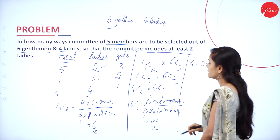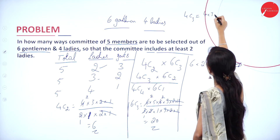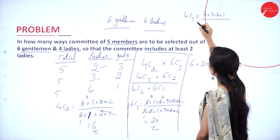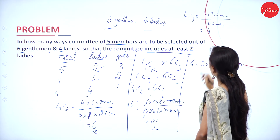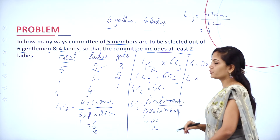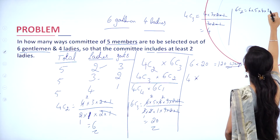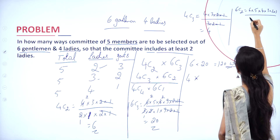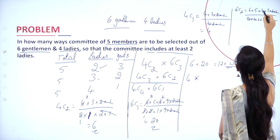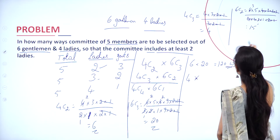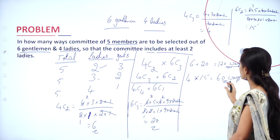Now find 4C3 × 6C2. 4C3 = 4! / (1! × 3!) = 4. And 6C2 = 6! / (4! × 2!) = 15. So 4C3 × 6C2 = 4 × 15 = 60 ways.